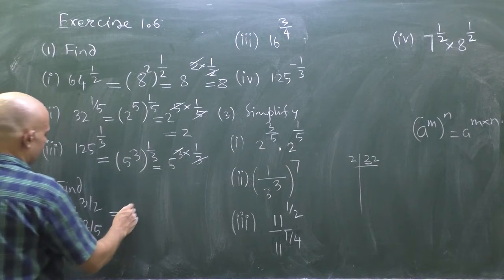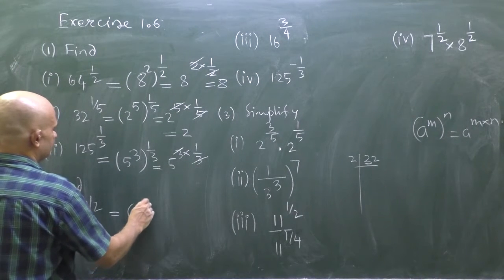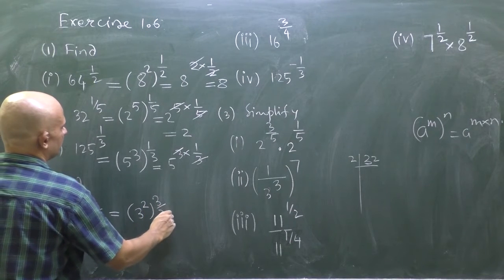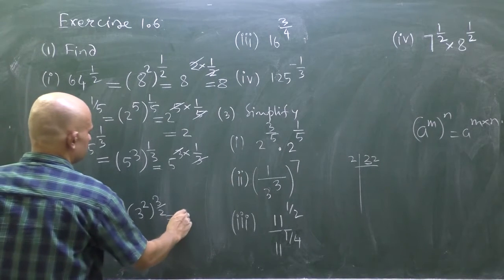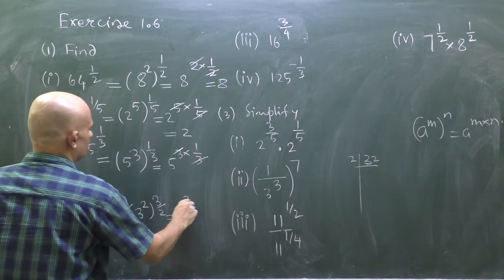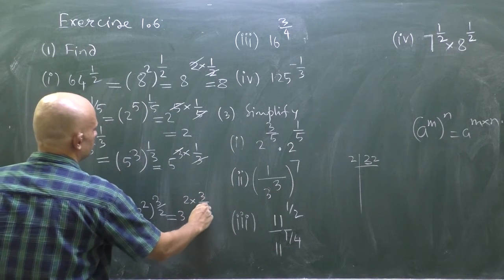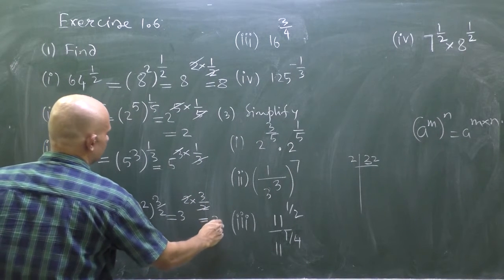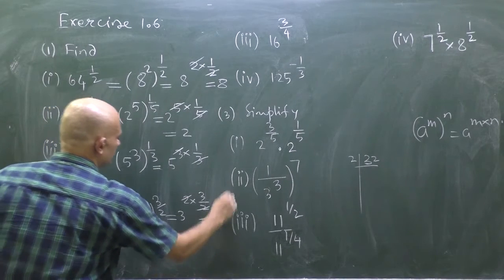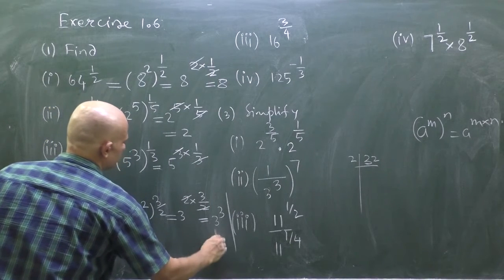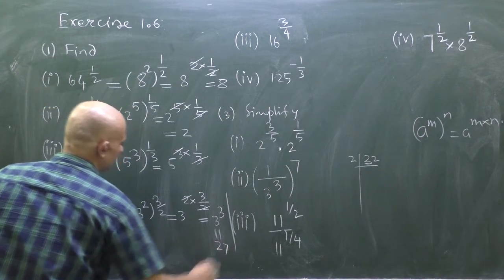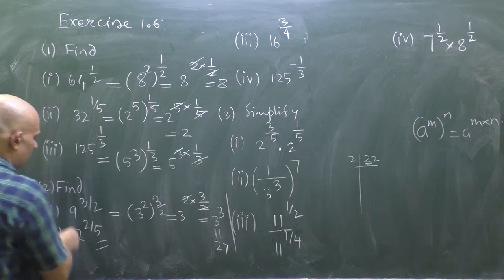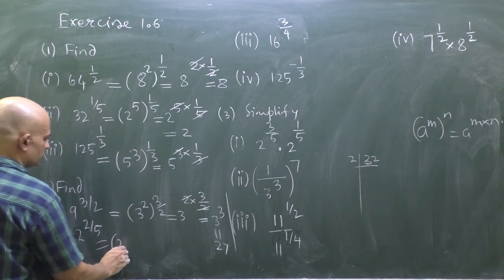For question 2, 9 to the power 3/2: write 9 as 3 squared, so it becomes (3^2)^(3/2). Use the same concept — 3 to the power 2 × (3/2). The 2s cancel, giving 3 to the power 3. And 3^3 = 27.